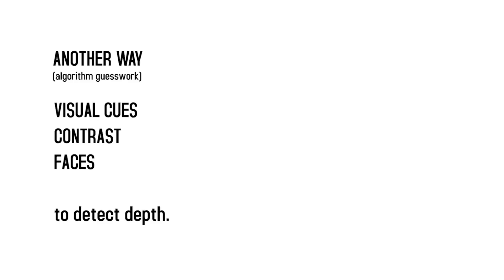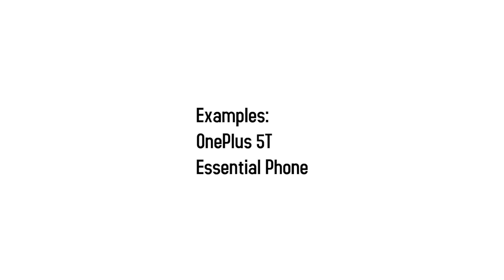There's another simple way of doing this by just guessing what's near and what's far by simple visual cues like detecting faces, contrast, and all that other stuff. That's how the OnePlus 5T does it, that's how the Essential phone does it, and also the selfie camera of the Google Pixel 2 does it. So there you go — that's how portrait mode works.